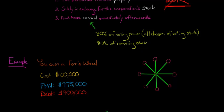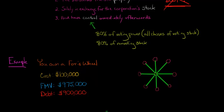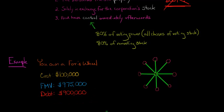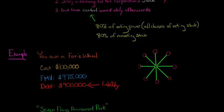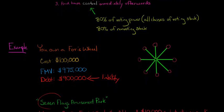Let's say that you own a Ferris wheel. The adjusted basis of the Ferris wheel is $100,000 and the fair market value is $975,000. Let's also assume that you have $900,000 in debt — you borrowed against the Ferris wheel as an asset at some point in the past. So you have this liability; debt is a liability.